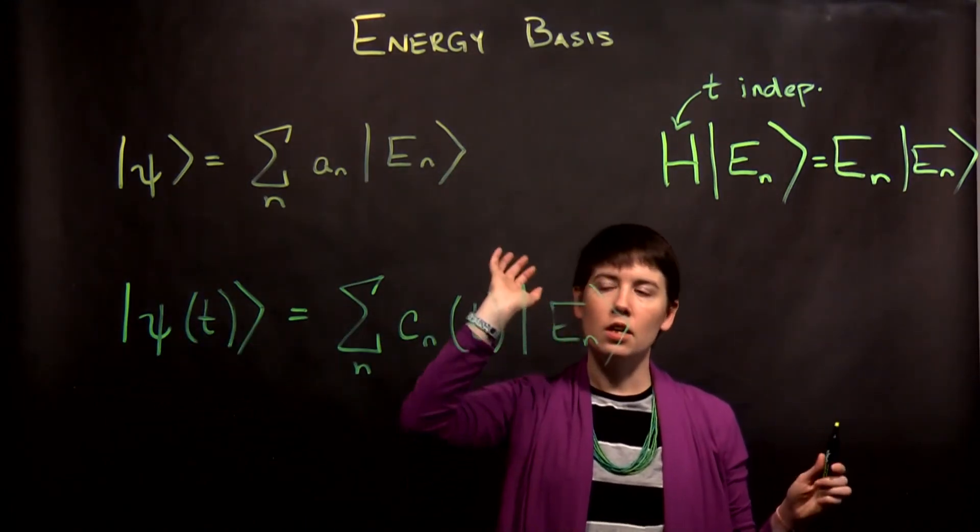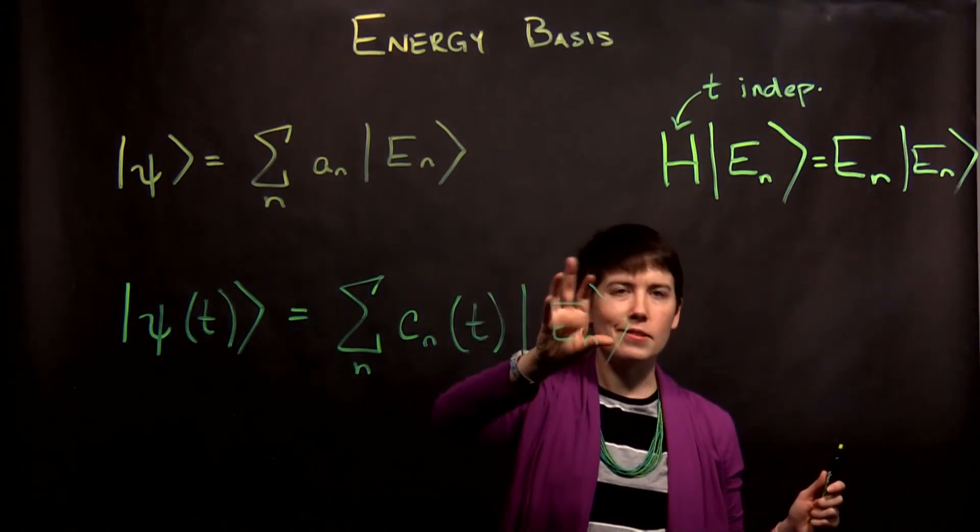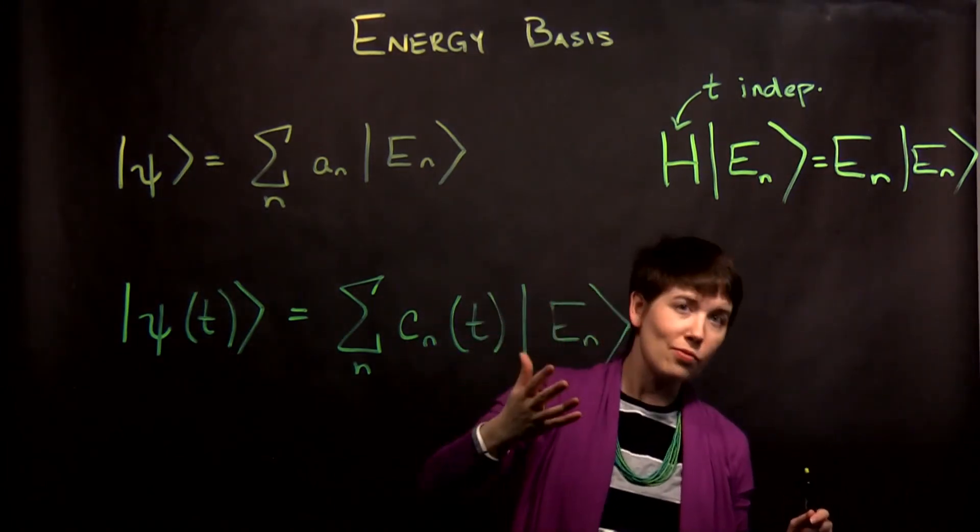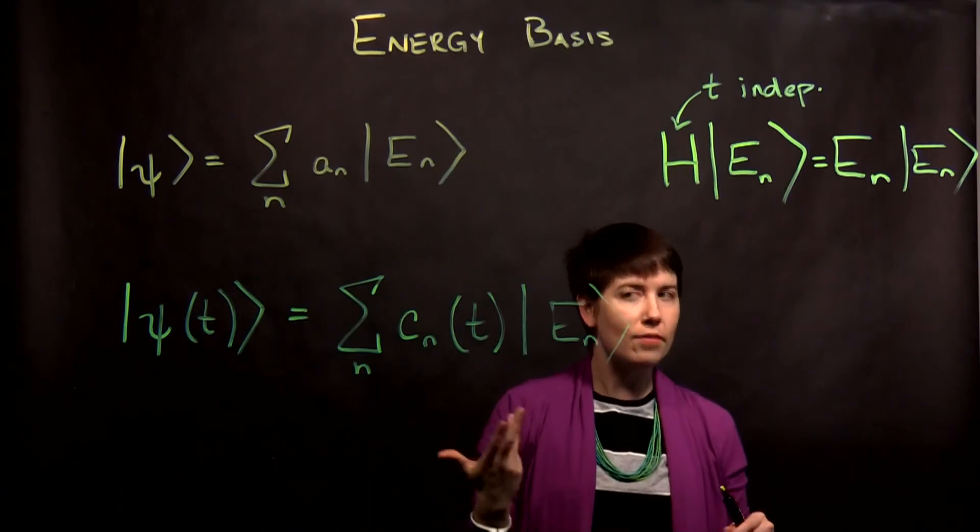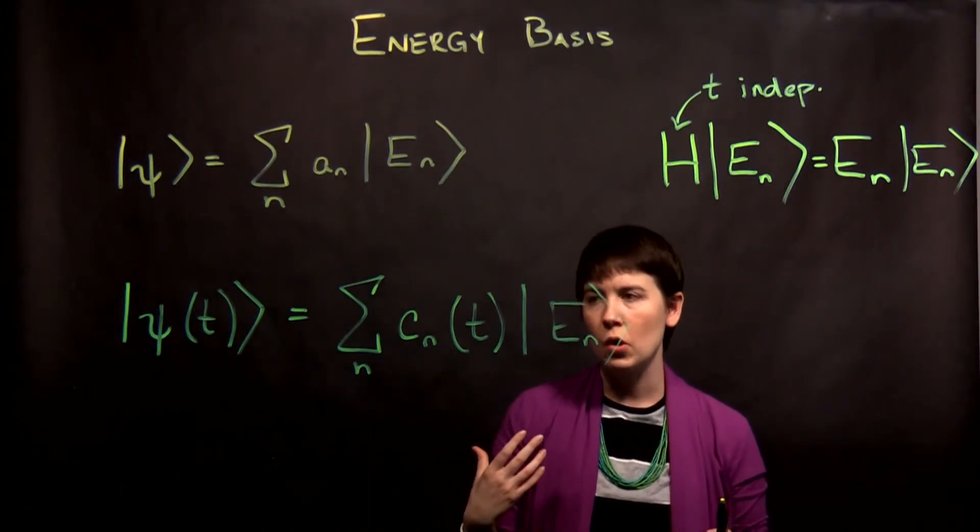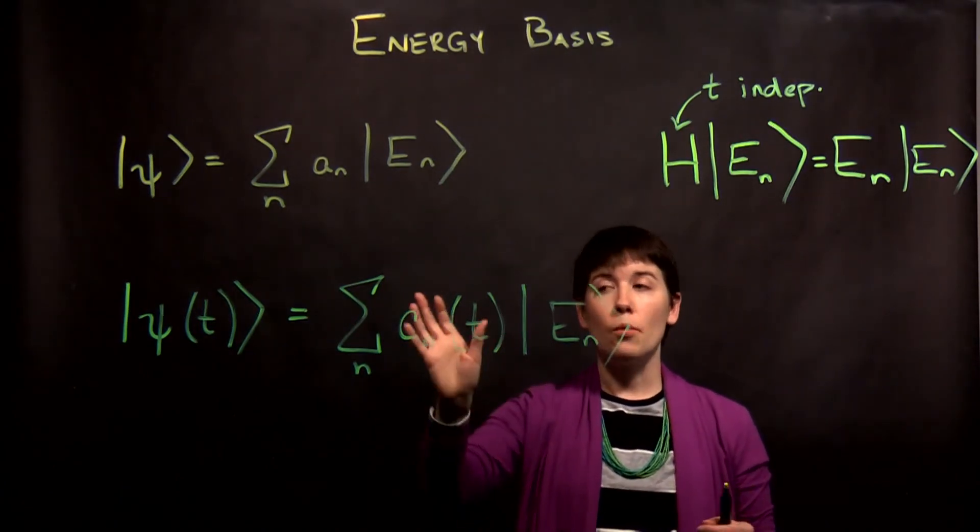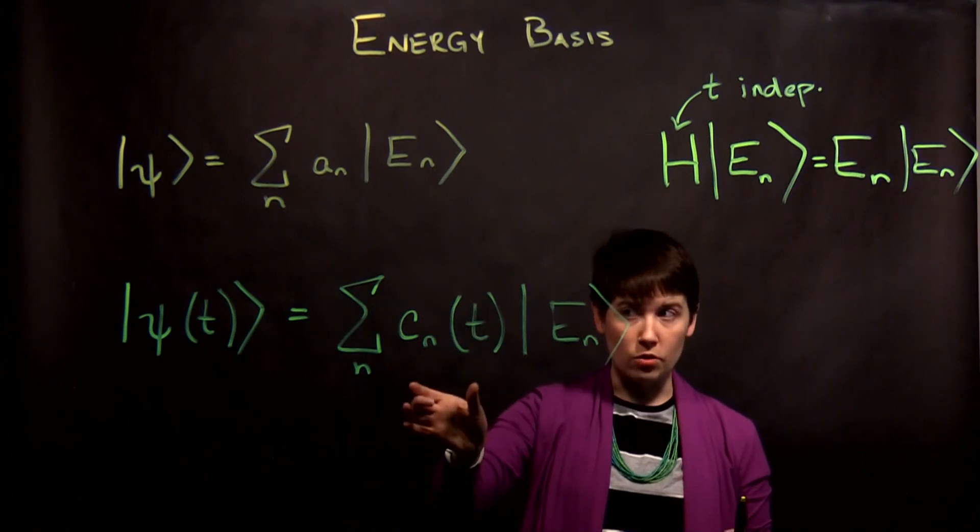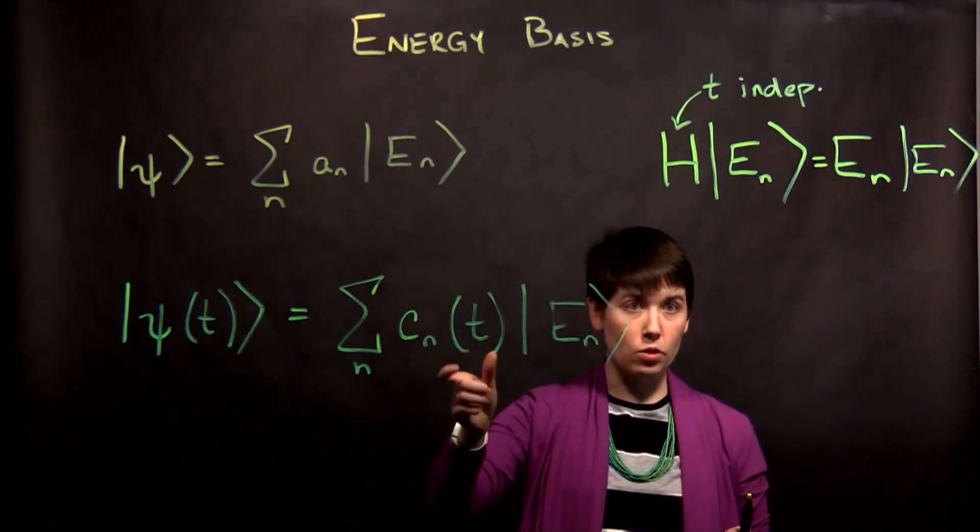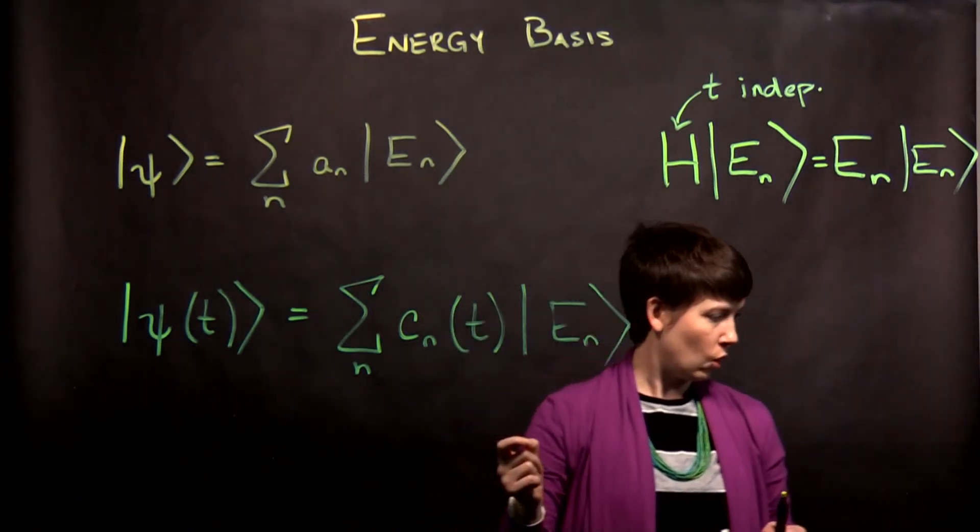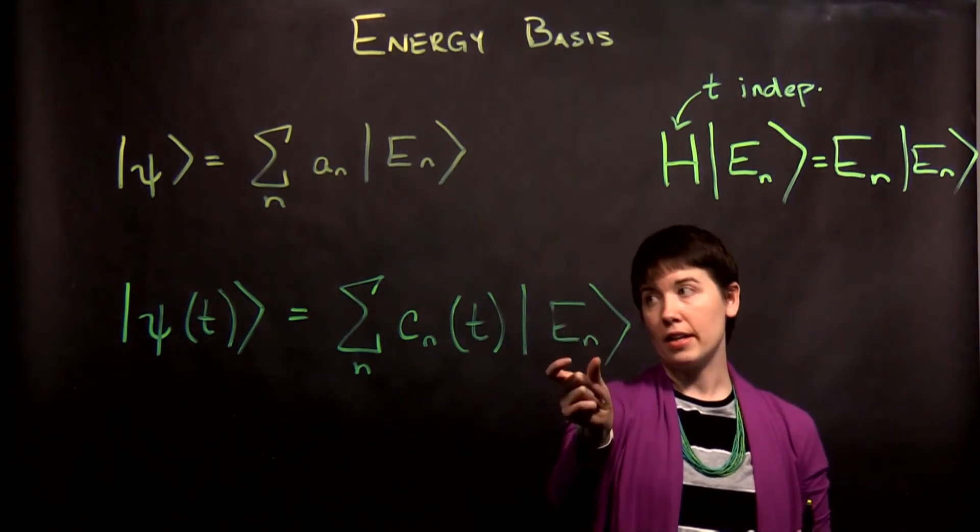That's what we have right now. When I say time independent, there's going to be a complex phase that maybe has time dependence we're going to get to next, but think about it this way: we have coefficients that might be changing with time. That's one way to put in time dependence, but then we also have these eigenvectors.